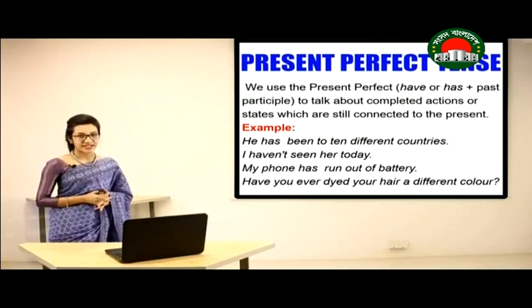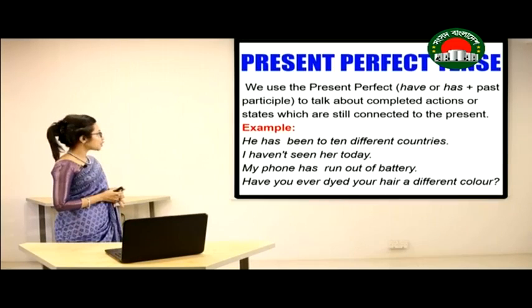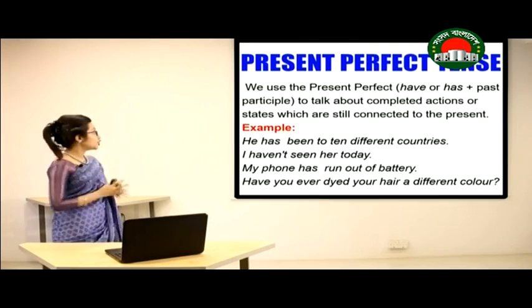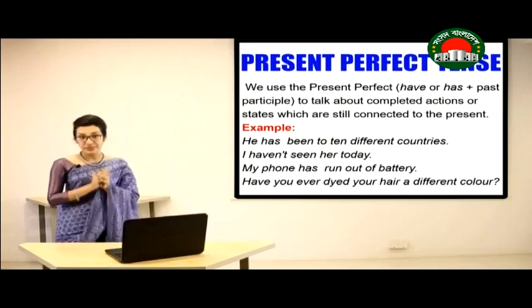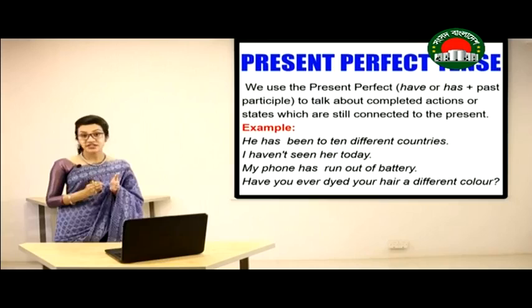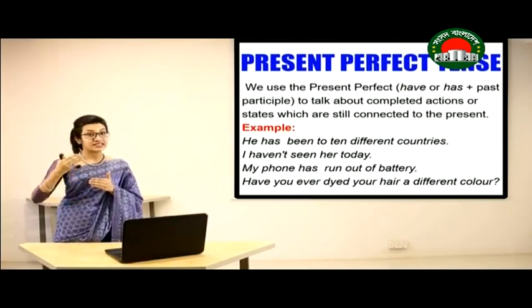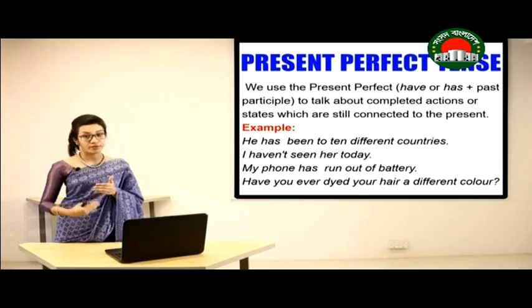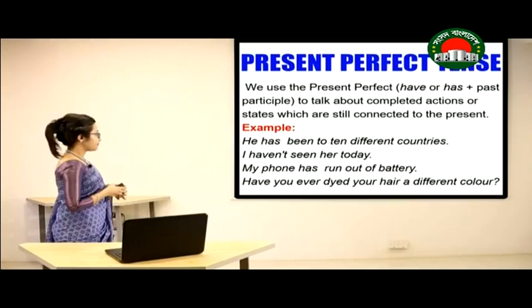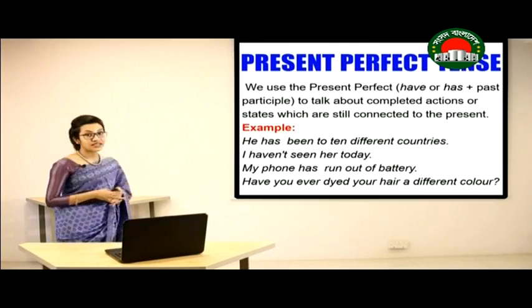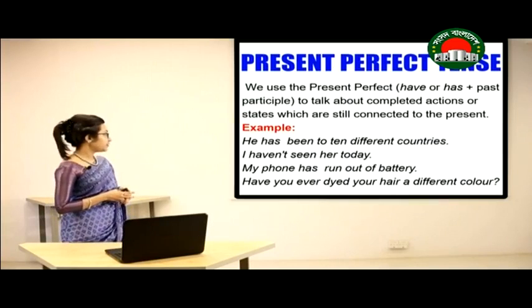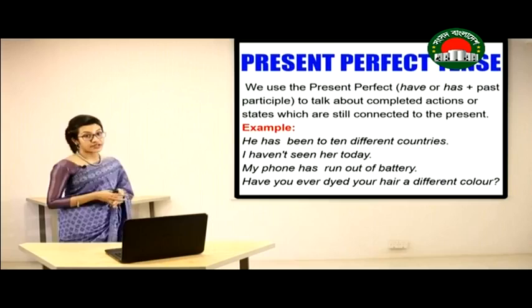We use Present Perfect to talk about completed actions or states which are still connected to the present — the action has already ended, but its result or effect is still present at this moment. For example: 'He has been to 10 different countries,' 'I haven't seen her today,' 'My phone has run out of battery,' and 'Have you ever dyed your hair a different color?'